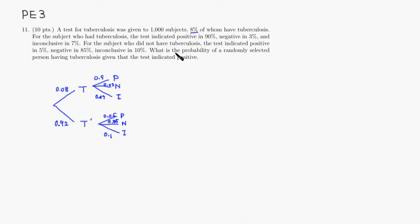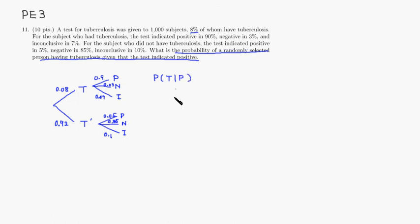We're looking for the probability of a randomly selected person having tuberculosis given that the tuberculosis test is positive — P(T | positive). By definition of conditional probability, this is defined as the probability of tuberculosis AND a positive test result, divided by the probability of getting a positive test result.